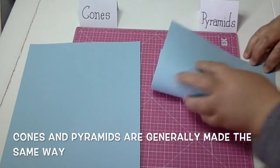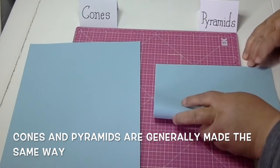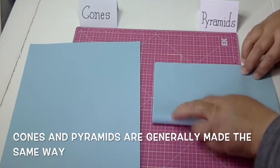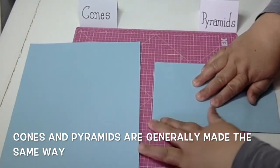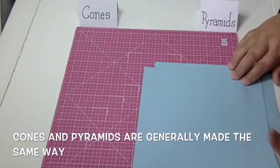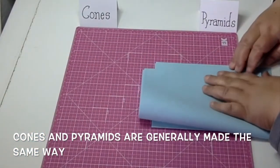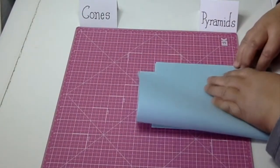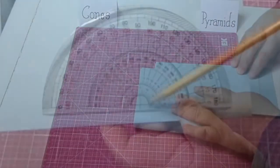Let's start off with a couple pieces of paper. I'm going to make cones on the left, pyramids on the right. You just fold the paper in half.